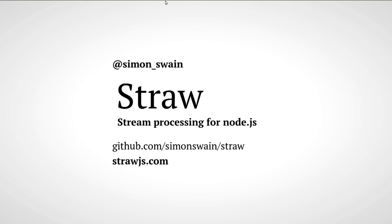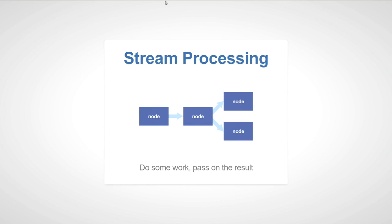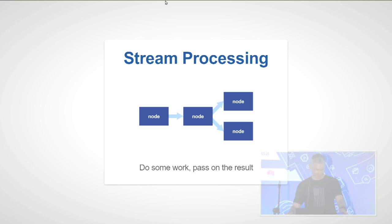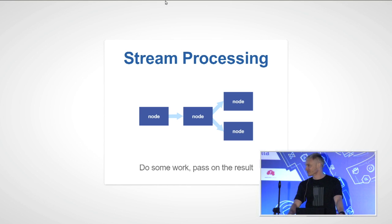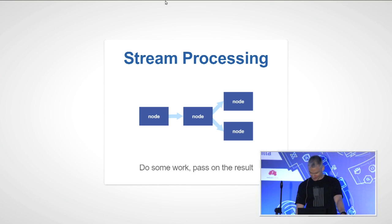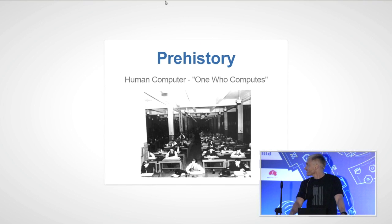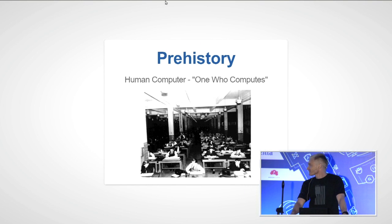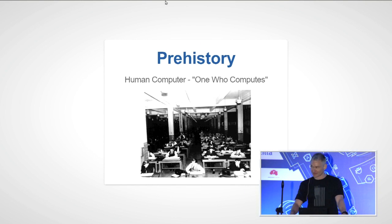Stream processing for Node.js. In the concept of stream processing, we have a topology of nodes. Each node receives some input, does some processing, passes on the result. As it turns out, this is a really fundamental concept in computing.